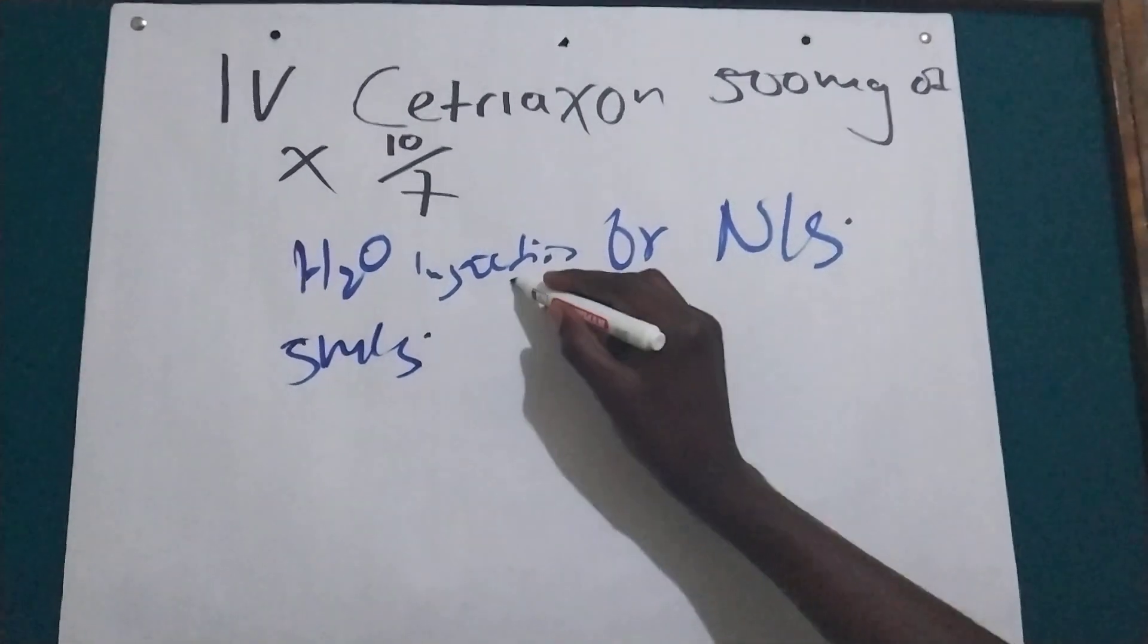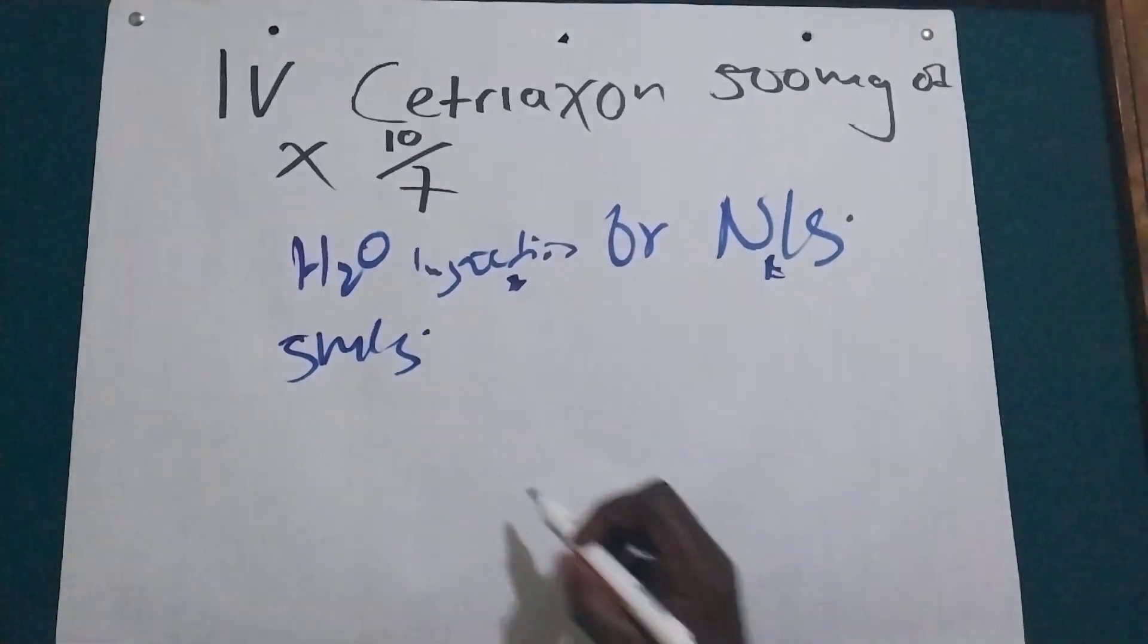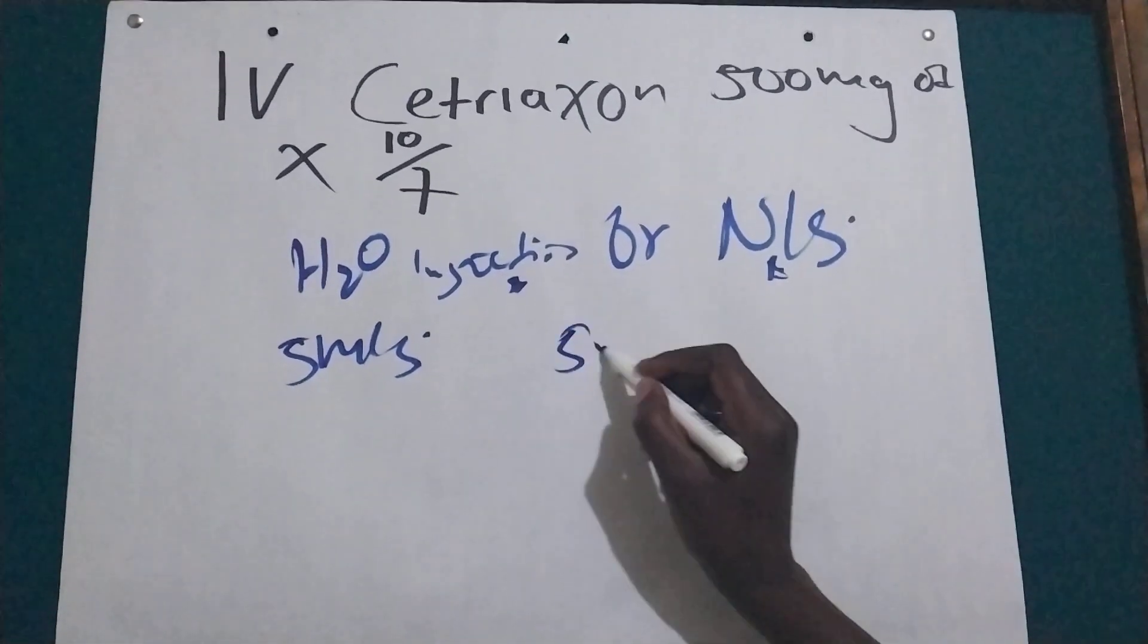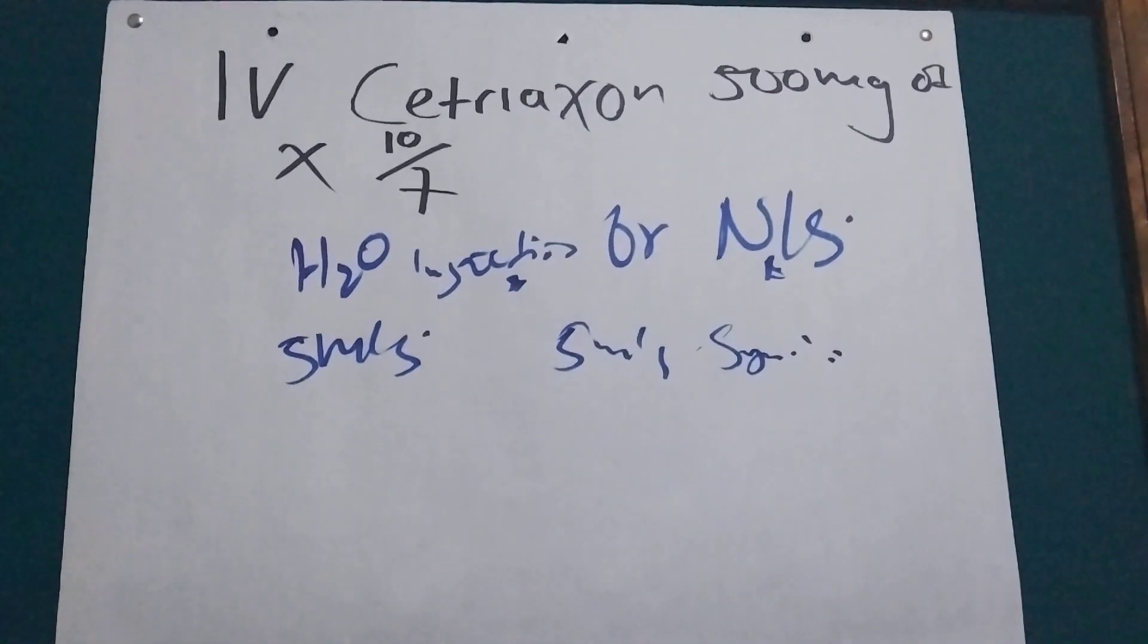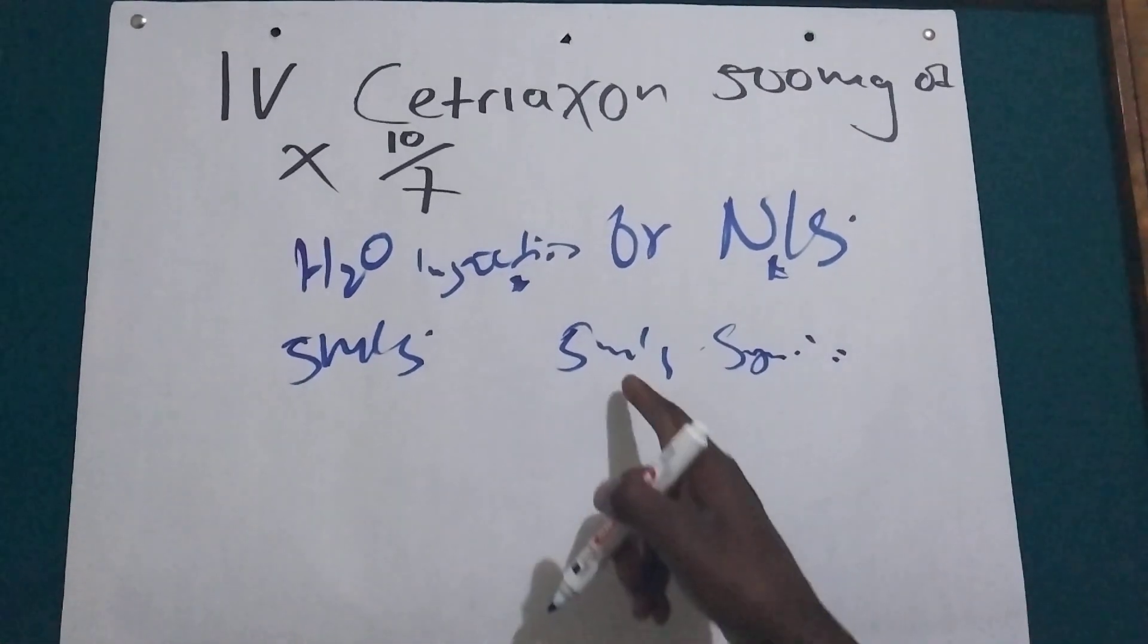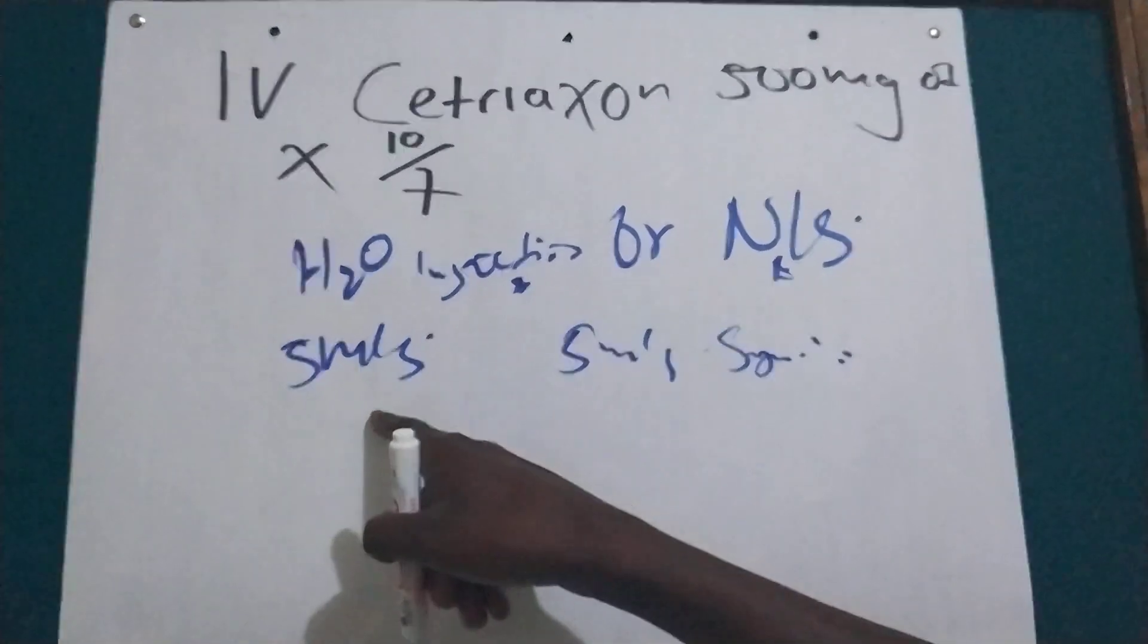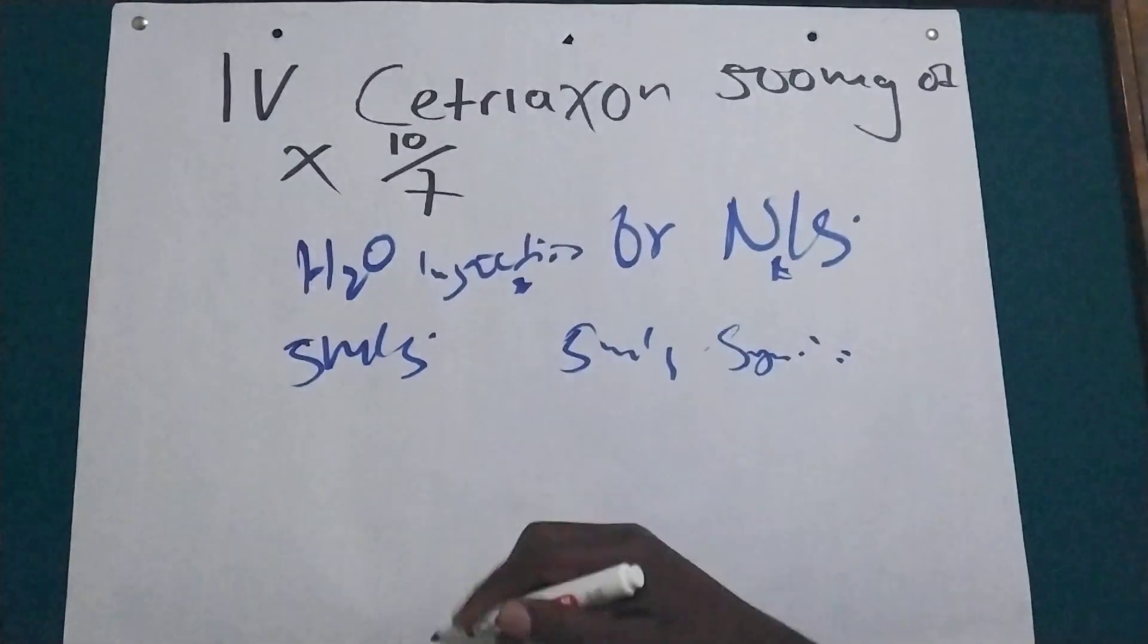Five mils of water for injection or normal saline and we are going to use five mil syringe to dilute this drug. So you just aspirate five mils of normal saline or water for injection.